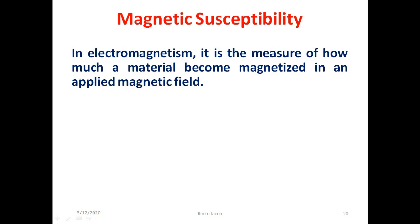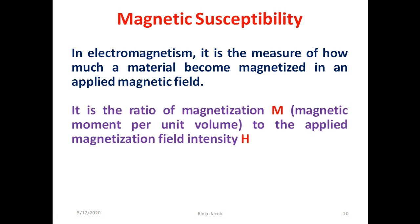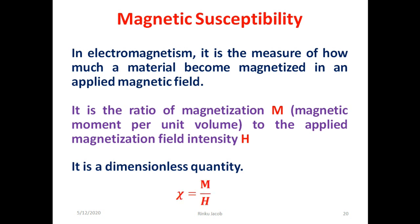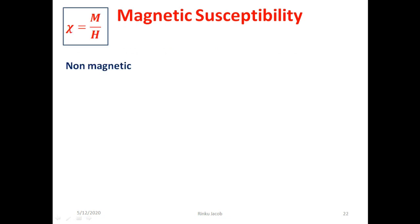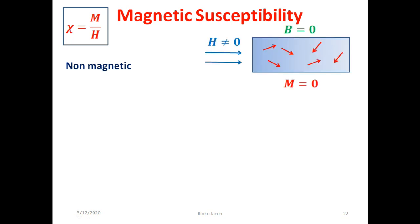Now we discuss about magnetic susceptibility. In electromagnetism, it is the measure of how much a material becomes magnetized in an applied magnetic field. It is the ratio of magnetization M, the magnetic moment per unit volume, to the applied magnetic field intensity H. It is a dimensionless quantity, mathematically written as chi equal to M by H. For non-magnetic materials, even if we apply a magnetizing field H externally, there is no magnetization M, so the magnetic susceptibility is zero.